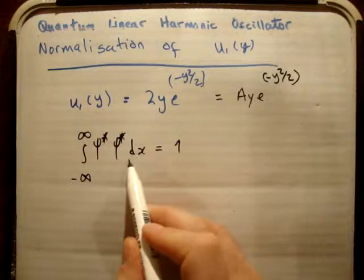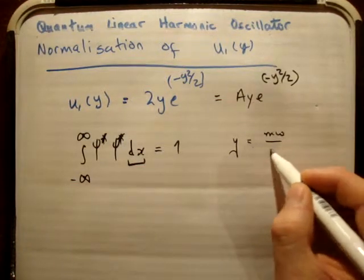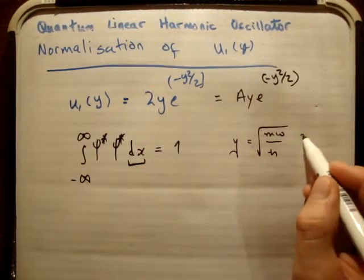The problem here, of course, is this is integrating dx, and we made a change of variables from x to y earlier on. So all we need to do is just take into account of that, and the change of variables we made is that y is equal to m omega over h bar square root of times x.